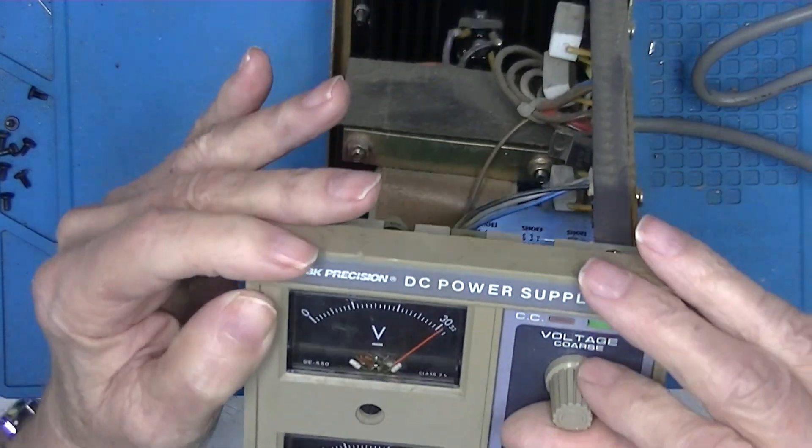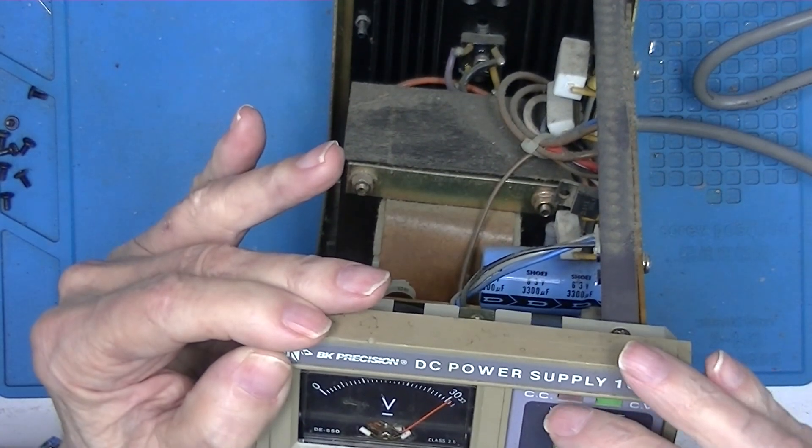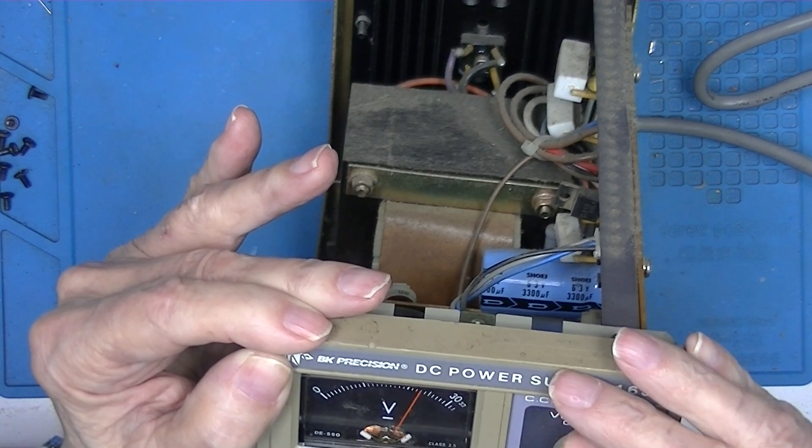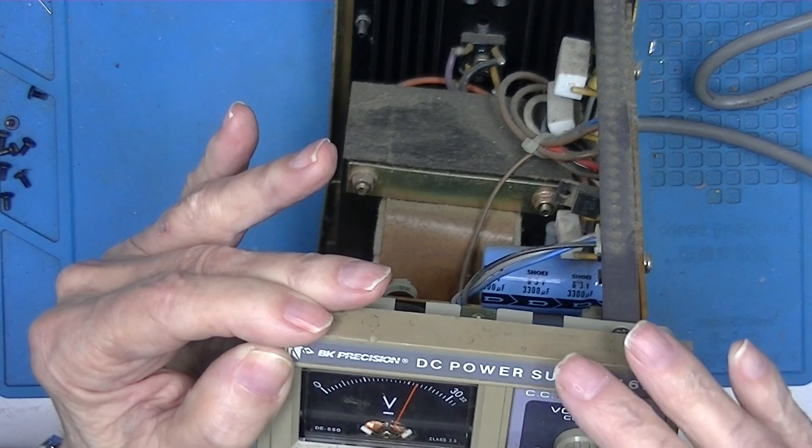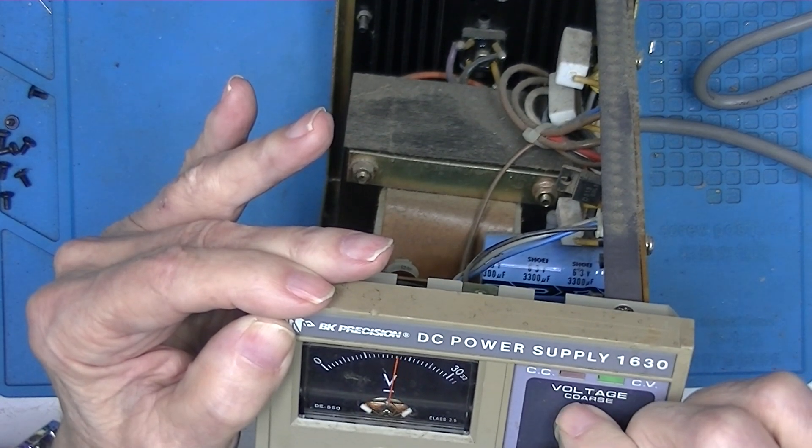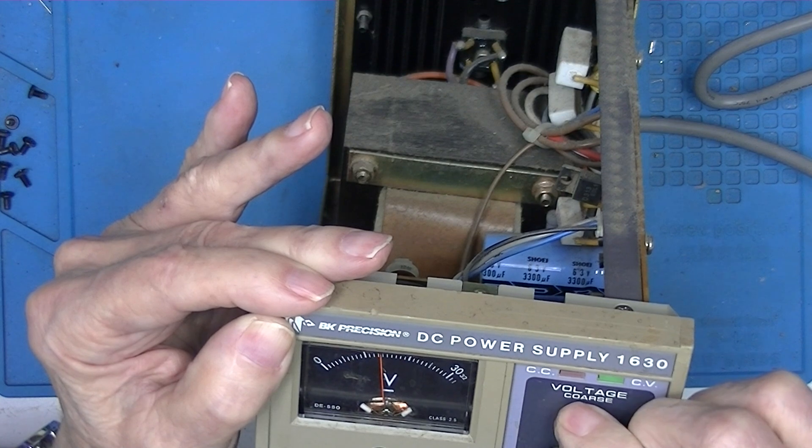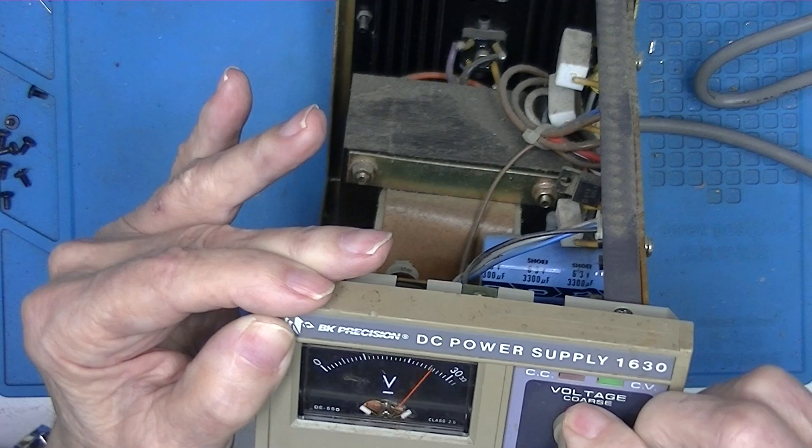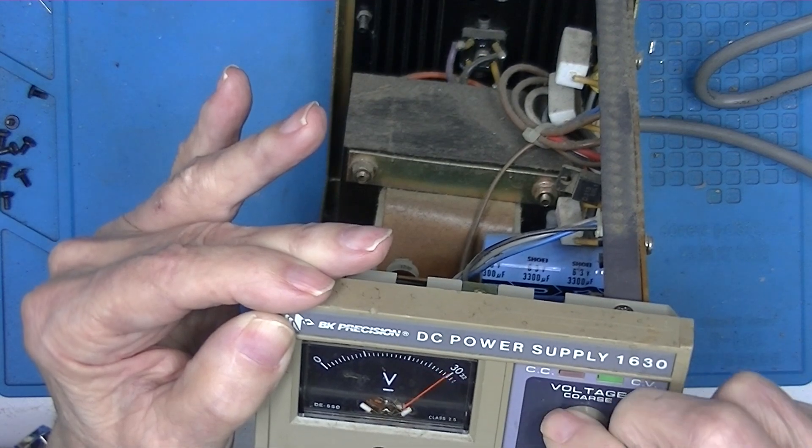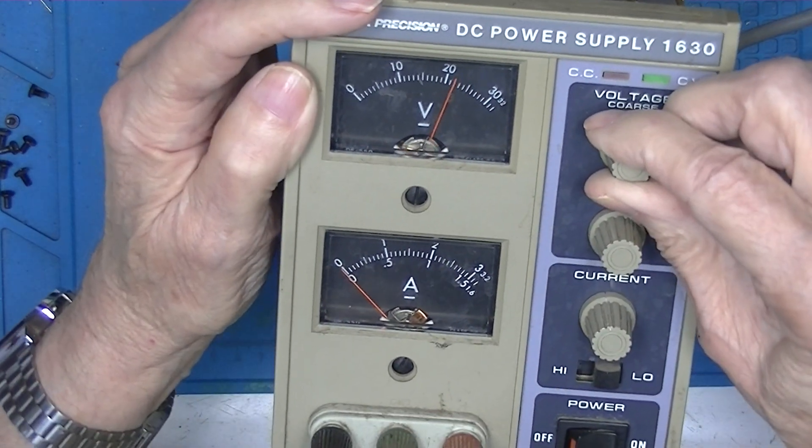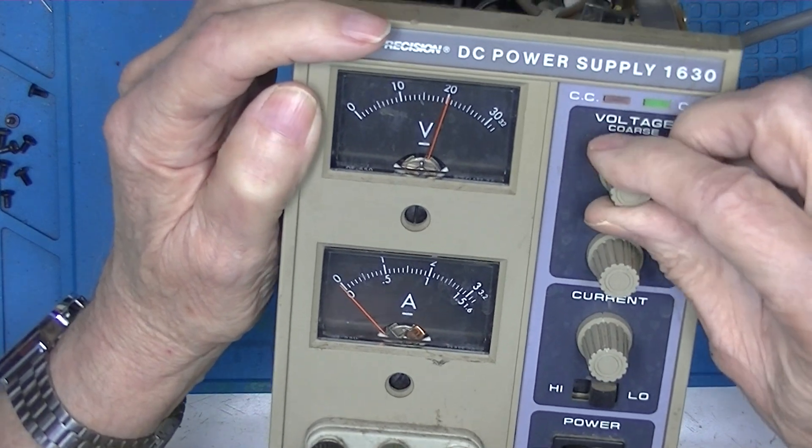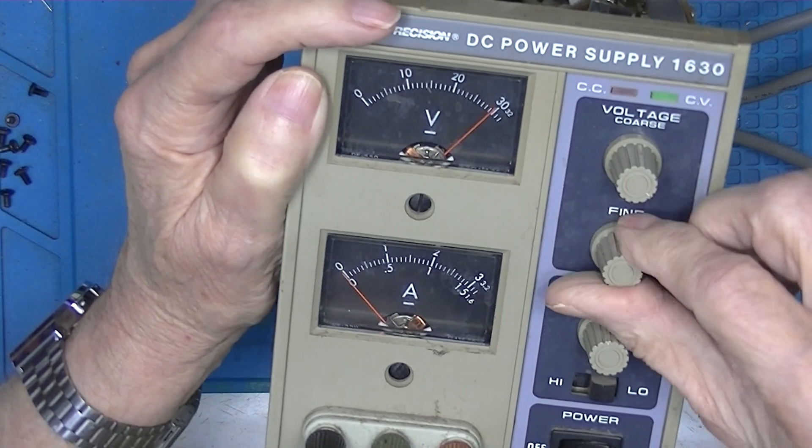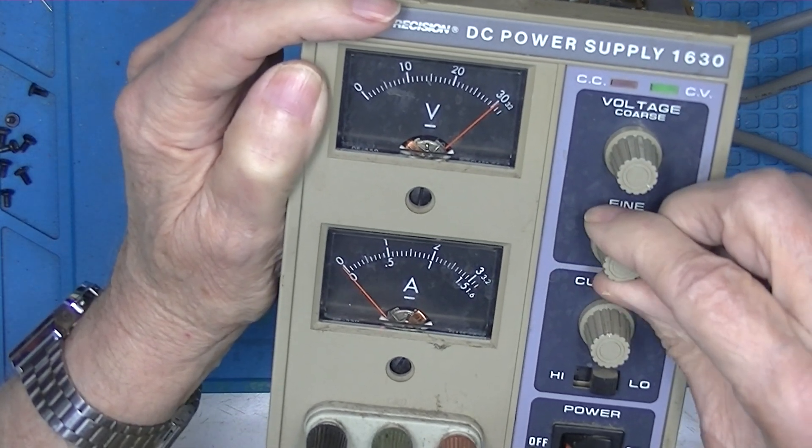It says 30 volts - and listen very carefully. That's a relay kicking on or off, there'll be another one. Hear the relays? Goes up nicely to 20 volts, 30 volts. Fine adjust seems alright.